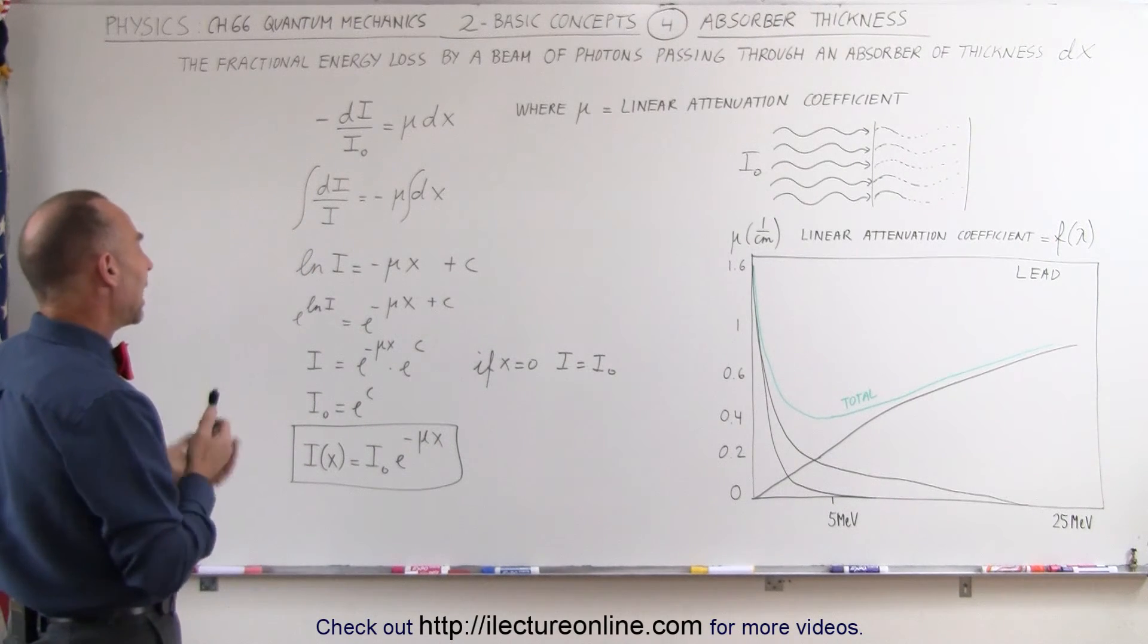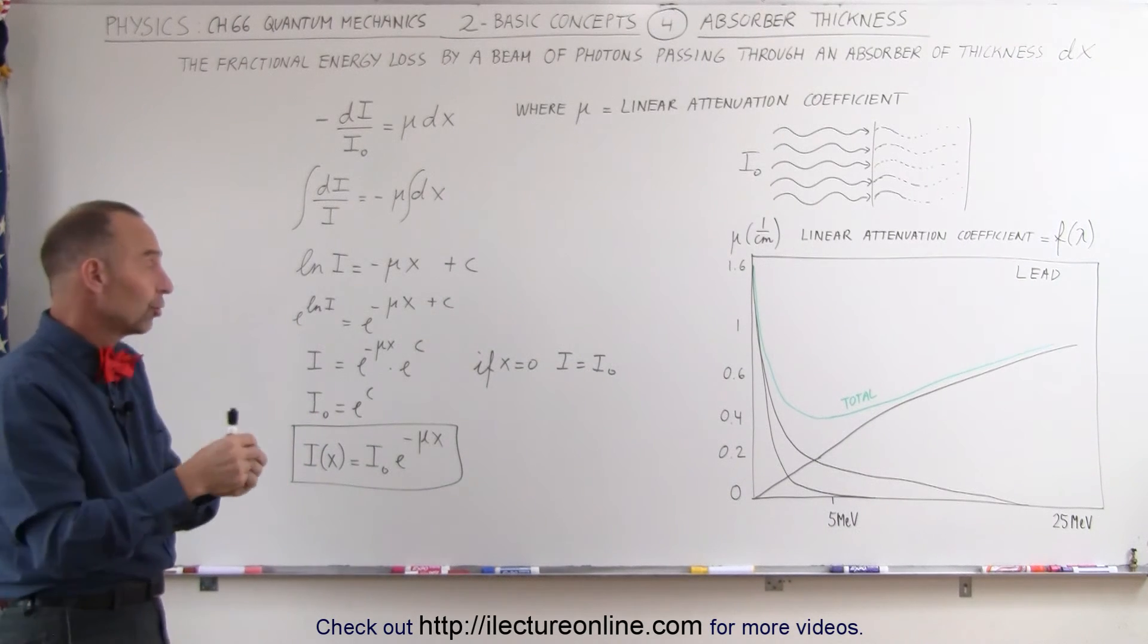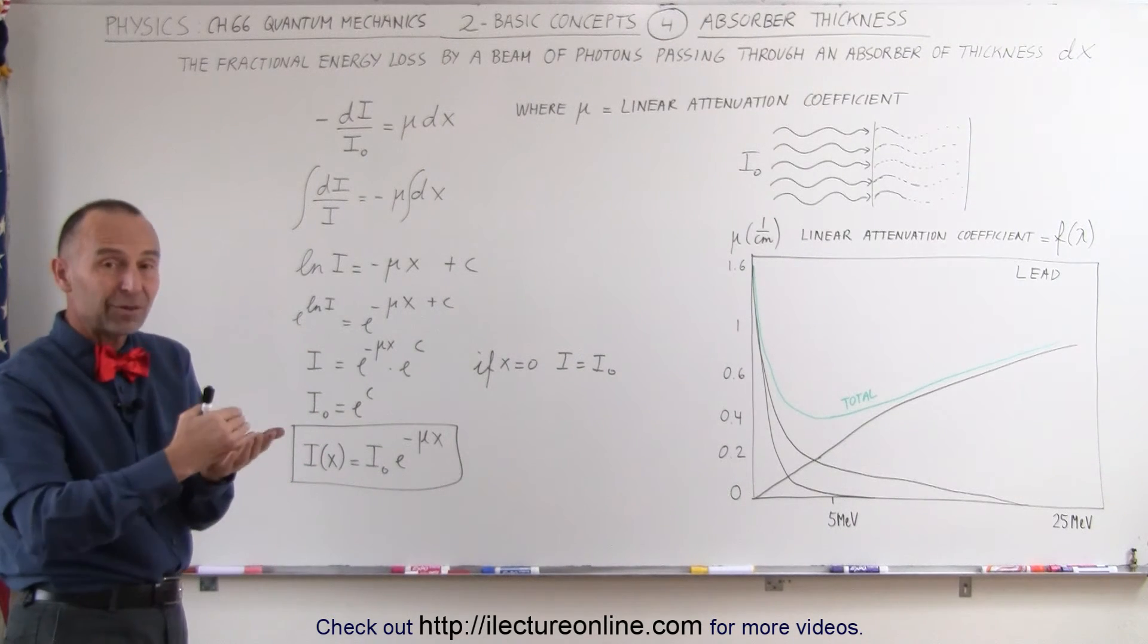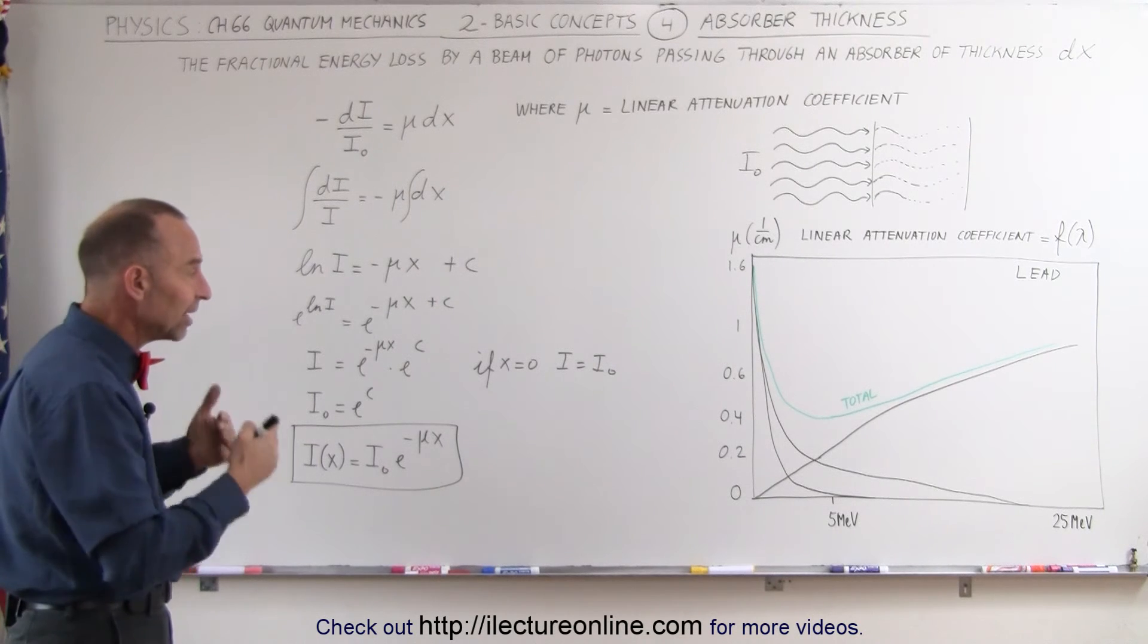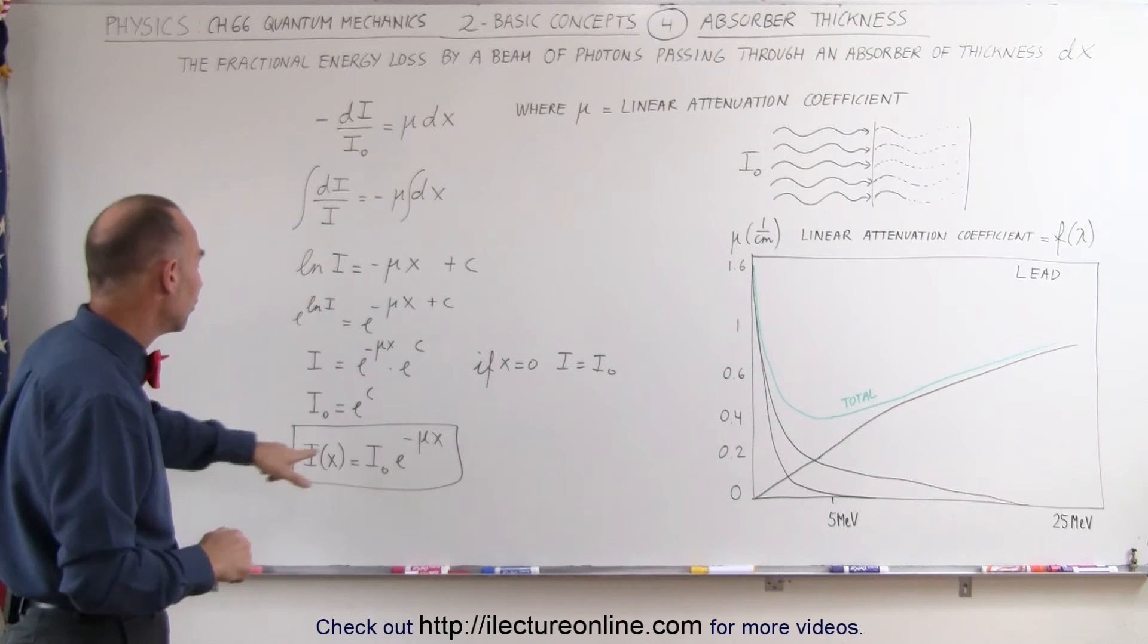Now we may want to ask ourselves a question: how thick must the material be to attenuate it down to a certain level? Let's say we want to get it down to 10% or 1% of the original intensity, how thick must the material be? Which means we want to solve this equation for x.